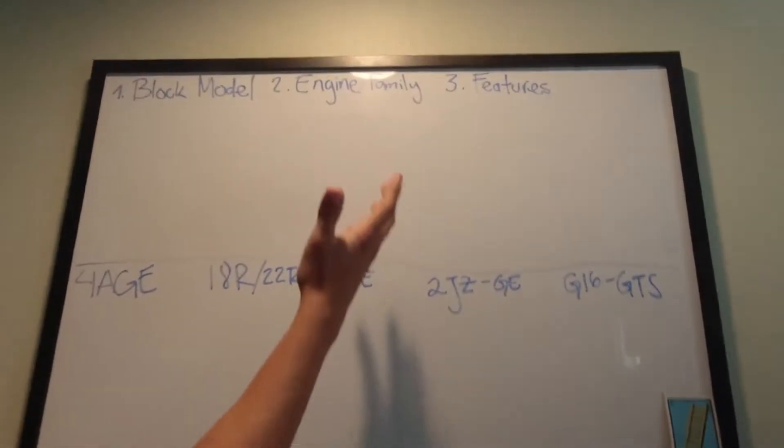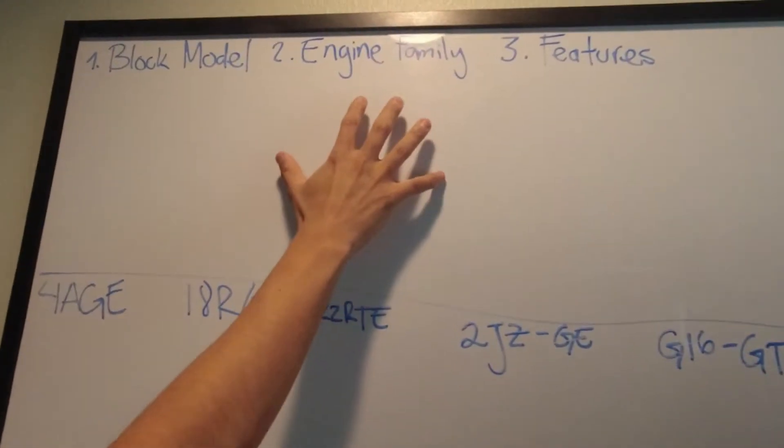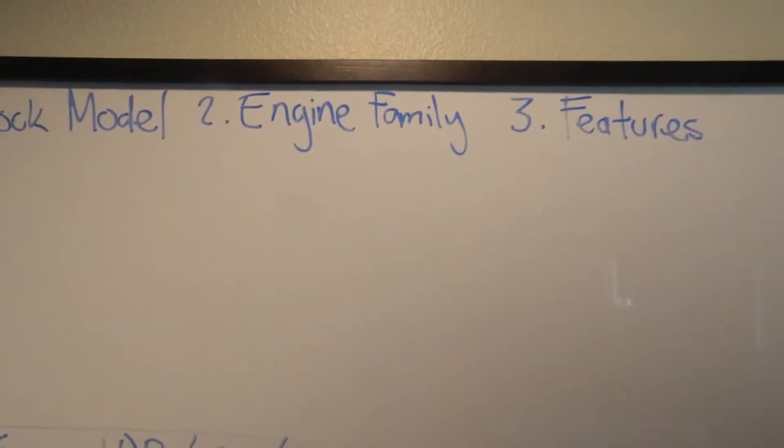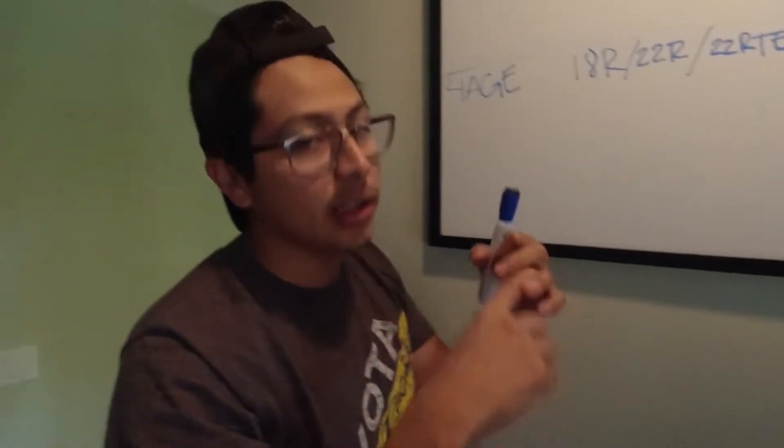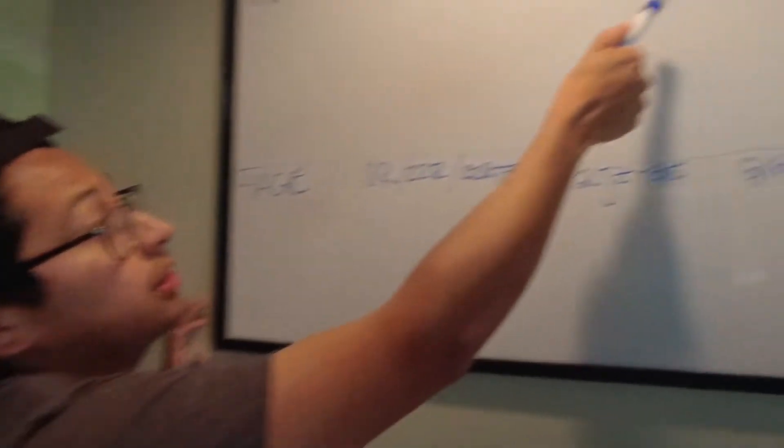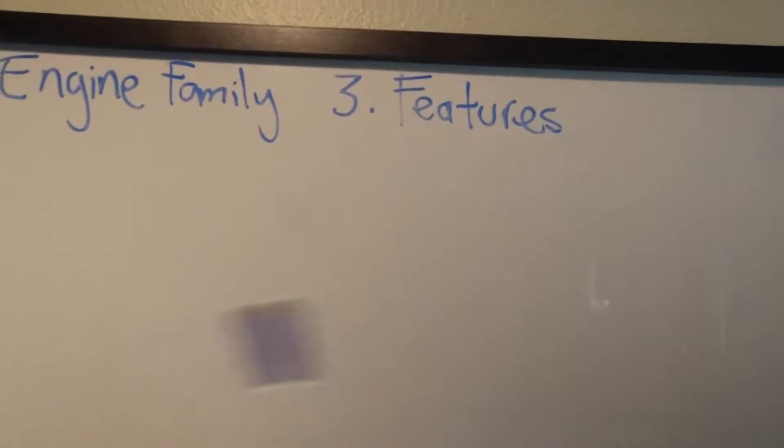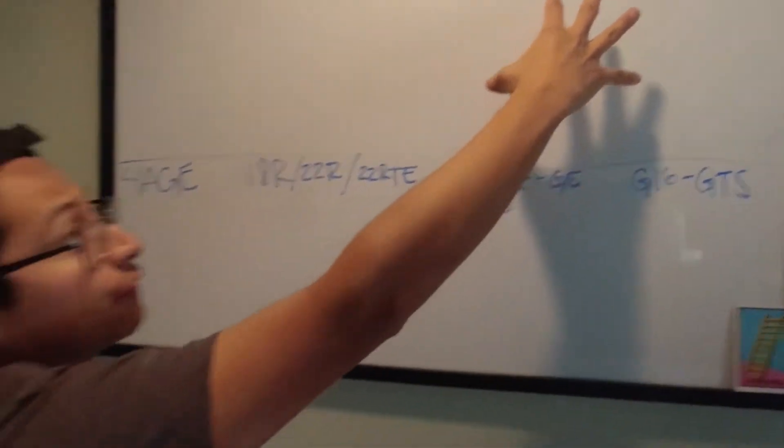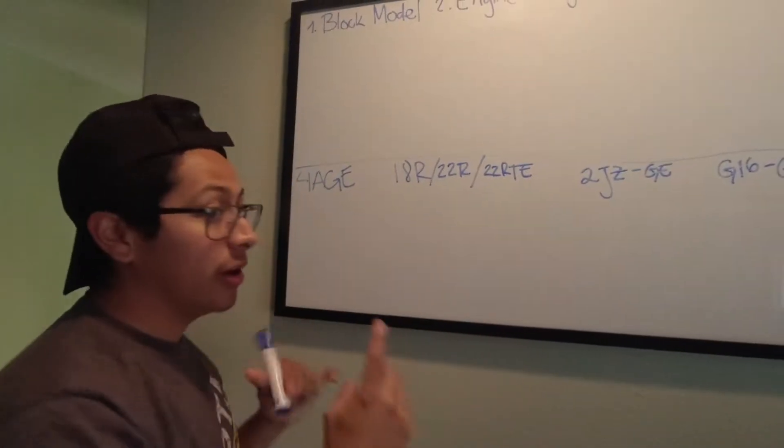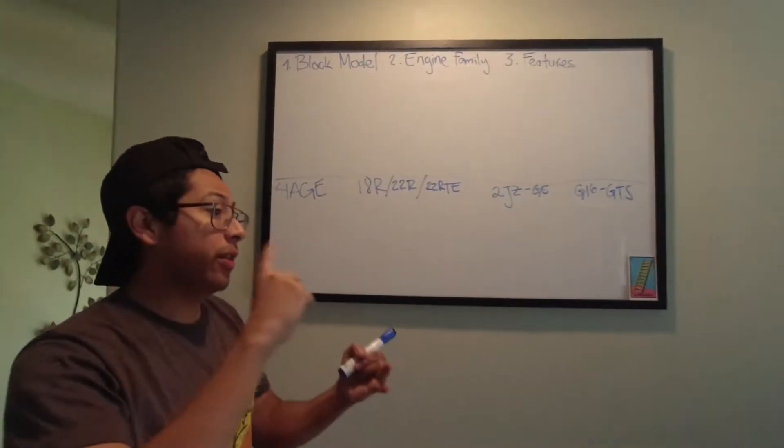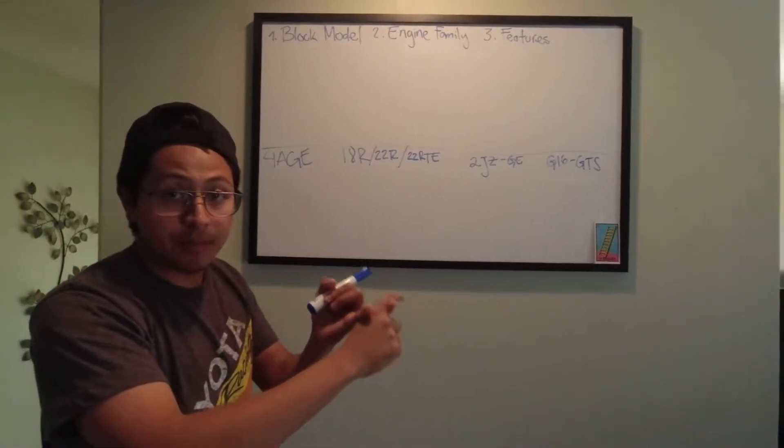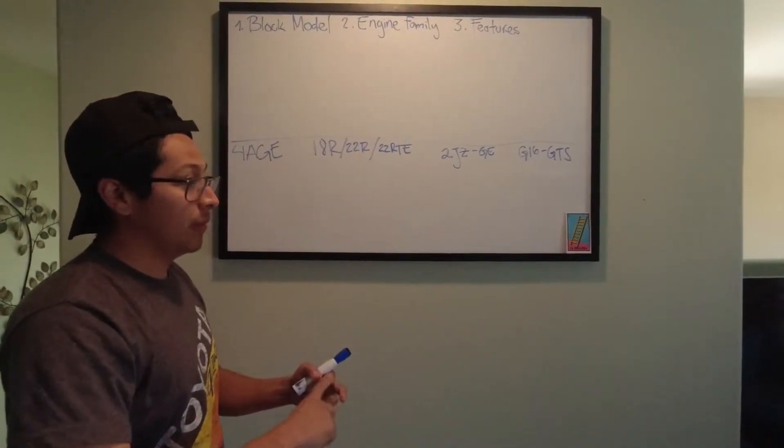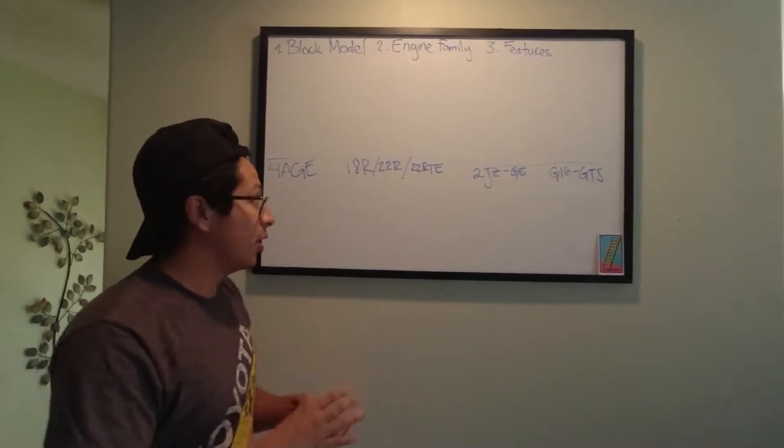The second and third character, usually, is going to be the engine family. So you have the A engine family, the S engine family, and so many more. Then the third part of it, everything after the engine family, is going to be all the features that that engine has. Whether it is a dual overhead cam, whether it is fuel injected, does it have a turbo, things like that.